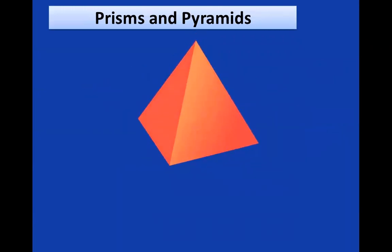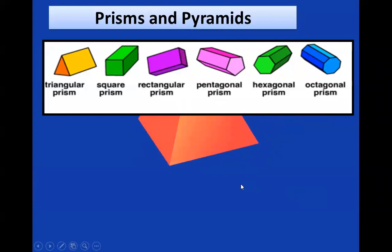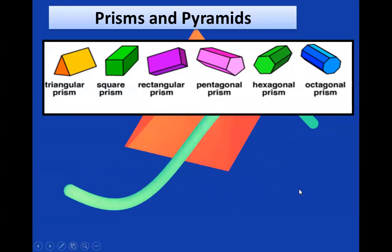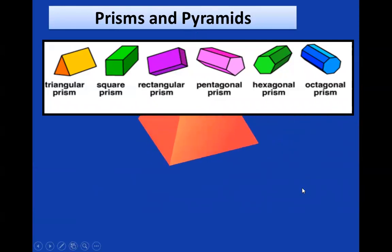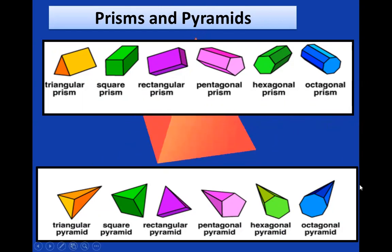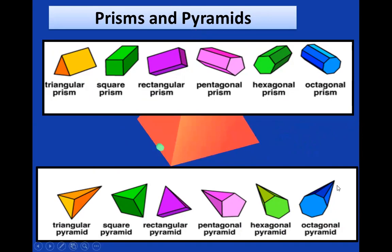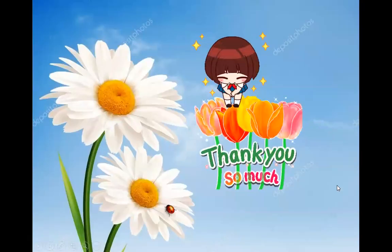Prisms and pyramids. These are the different prisms: triangular prism, square prism, rectangular prism, pentagonal prism, hexagonal prism and octagonal prism. These are the different pyramids: triangular pyramid, square pyramid, rectangular pyramid, pentagonal pyramid, hexagonal pyramid and octagonal pyramid. Thank you children.